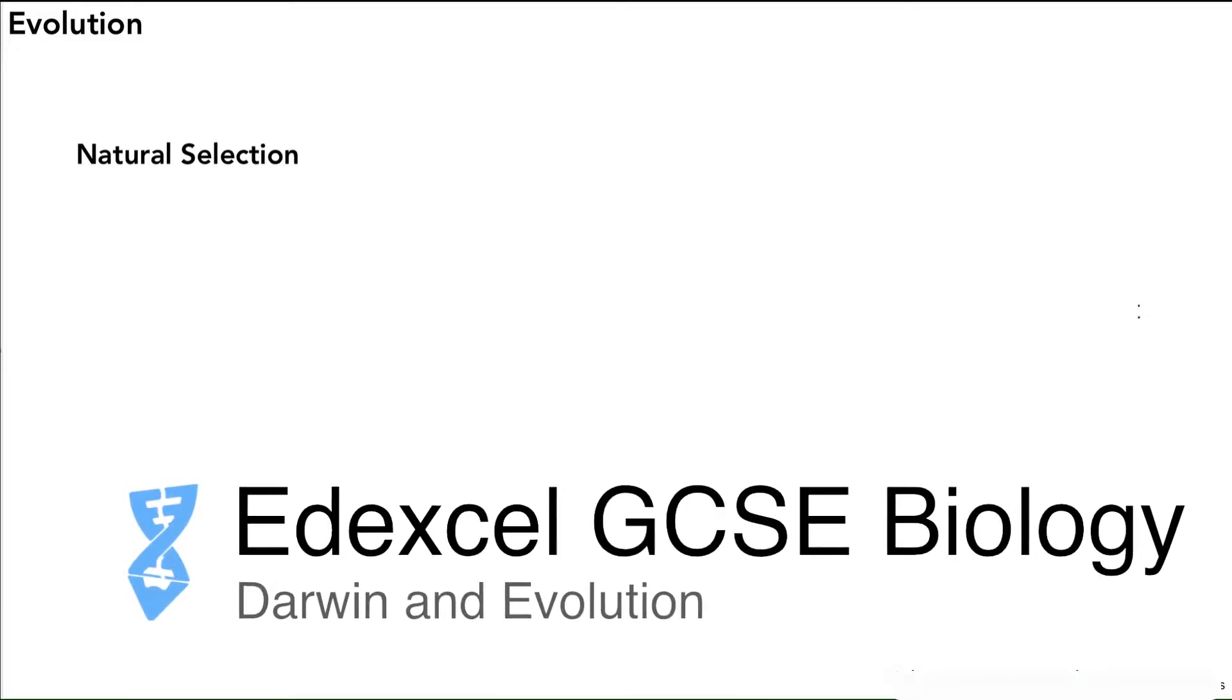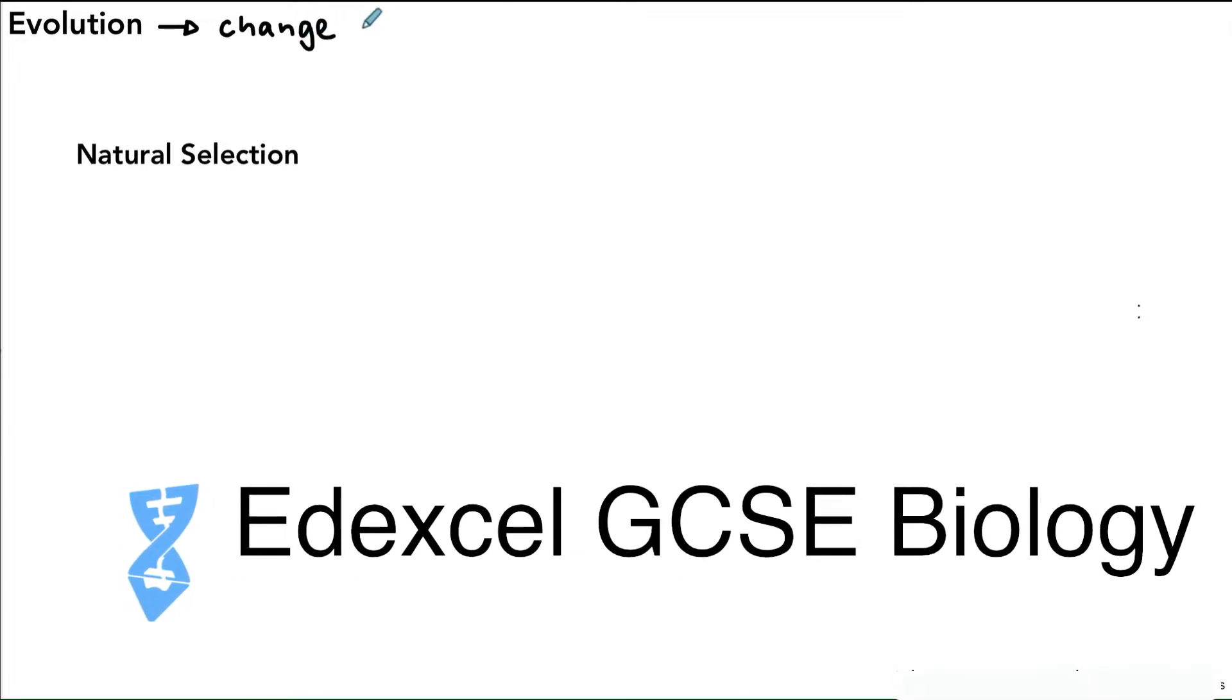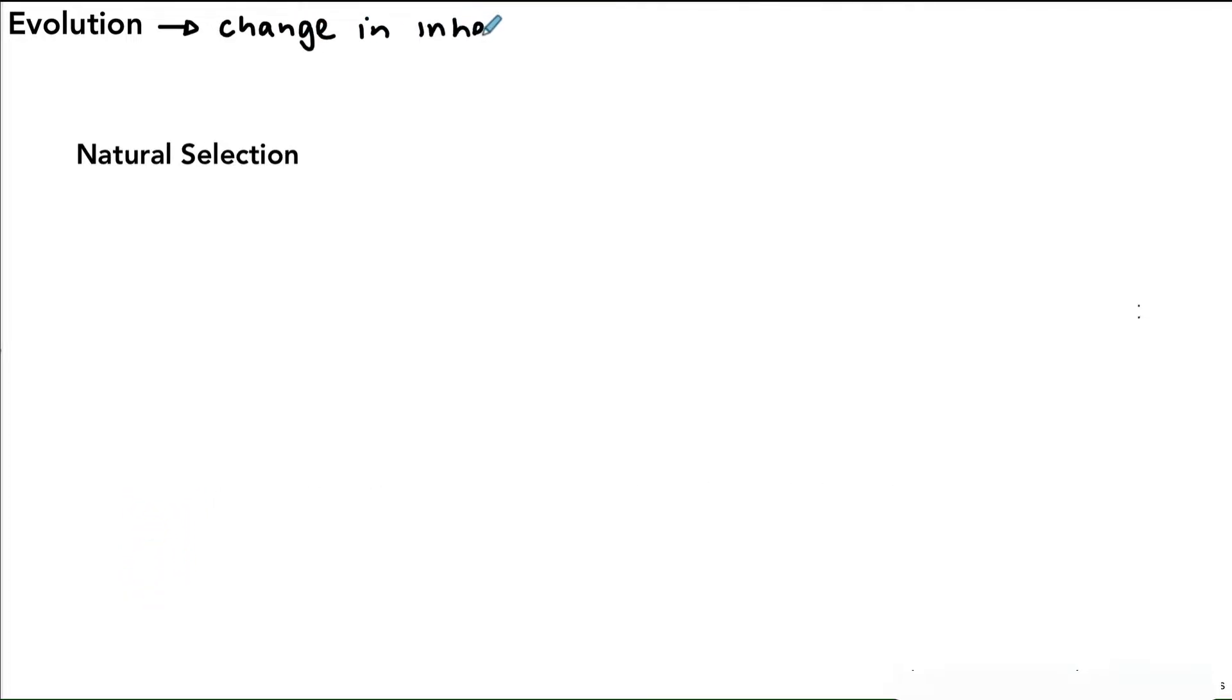Hello, today we're talking about evolution and how species evolve over long periods of time. Overall, we could say evolution is a change in inherited characteristics over time, and it's important that we say inherited because that shows it is passed on from parents to offspring.